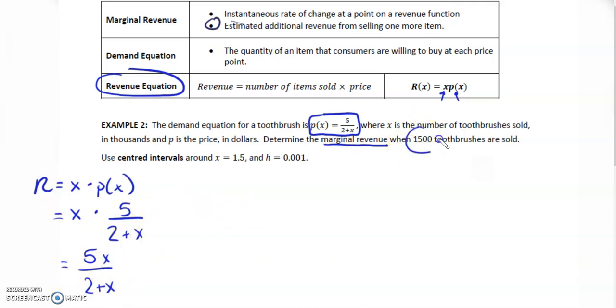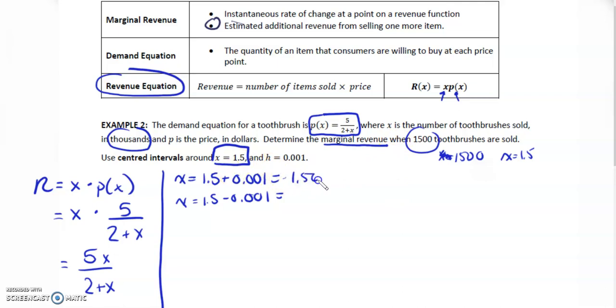It gives us x equals 1,500. Let's use centered intervals around 1.5. x will not equal 1,500 because that's in thousands. So x is going to be 1.5. Centered intervals means we're going to take x and add h to it, and take x and subtract h from it. We're going to use these two values for our interval. So we're going to use the values 1.501 and 1.499.